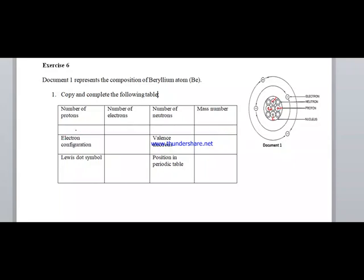The number of protons is equal to 4. The number of electrons is also equal to 4: 1, 2, 3, and 4. The number of neutrons is 1, 2, 3, 4, and 5 — we have 5 neutrons. The mass number A is the sum of protons and neutrons: 4 plus 5 is equal to 9. So A = Z + N.